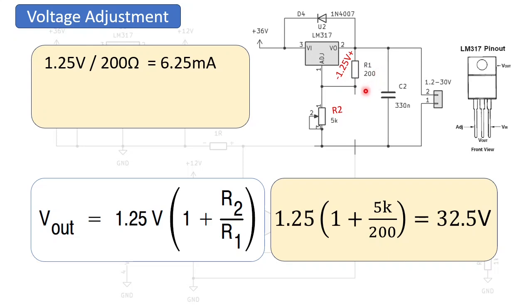Now, this current cannot flow into pin 1 because that's a sense pin. So, it has to go into R2 of 5k. Now, with 5k times 6.25 milliamps, we will have 31.25 volts over R2. Now, if we add these two voltages together, we have exactly 32.5 volts. So, that's correct.